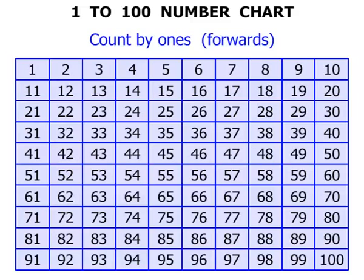Let's start by counting by ones. We're going to count forwards. So starting at 1: 2, 3, 4, 5, 6, 7, 8, 9, 10, 11, 12, 13. Now we could of course continue that on.